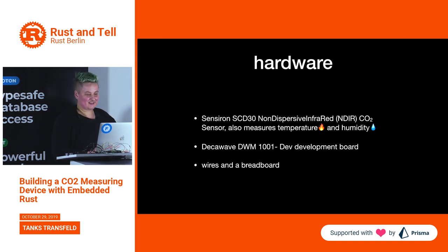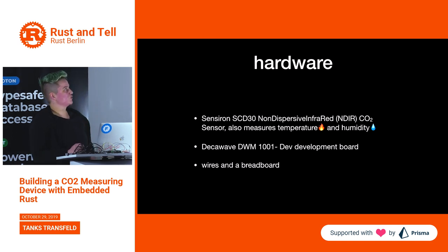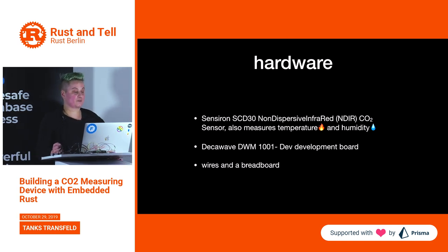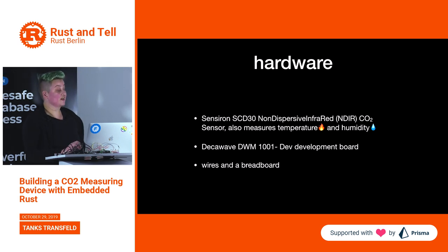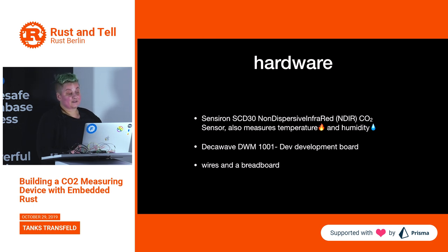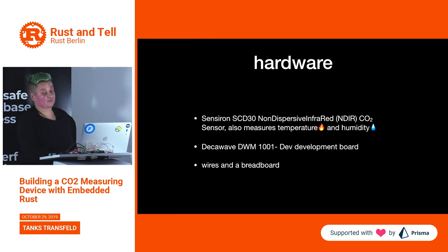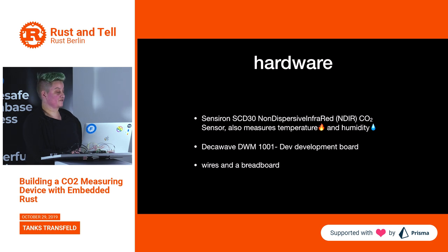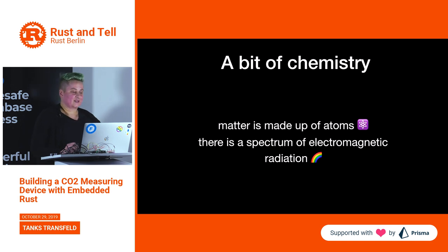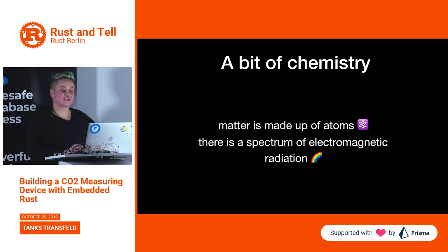Back to the CO2 measuring device. The hardware I use is one sensor from Sensirion, the SCD30, which is a non-dispersive infrared carbon dioxide sensor — I will explain what that means — and it also measures temperature and humidity. The microcontroller I use is a Nordic DWM1001 development board, plus lots of wires and a breadboard.